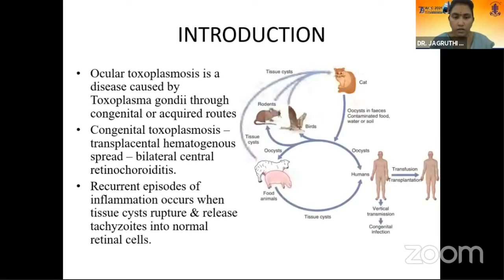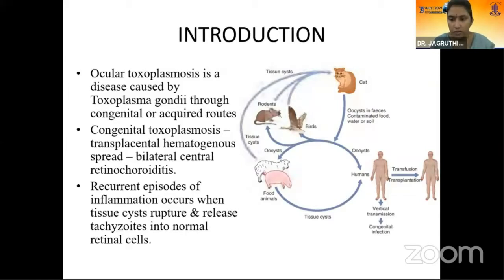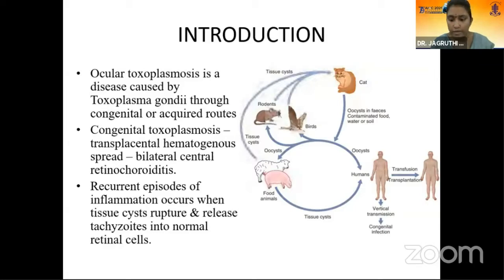Introduction. Ocular toxoplasmosis is a disease caused by Toxoplasma gondii through congenital or acquired routes. Congenital infection is by transplacental hematogenous spread, which manifests as bilateral central retinochoroiditis leaving a scar, which is an incidental finding. Acquired infection is obtained through contaminated feces or soil, sporulated oocysts, or by consuming undercooked meat or pork. Recurrent episodes of inflammation occur when tissue cysts rupture and release tachyzoites into normal retinal cells.